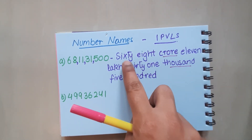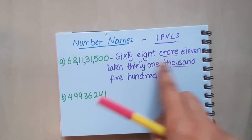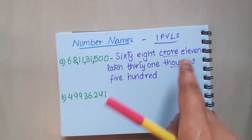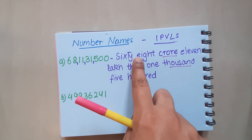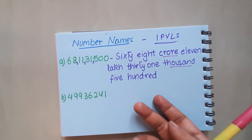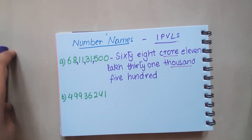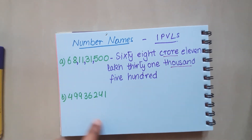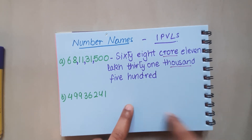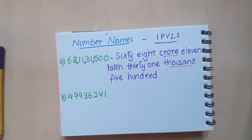So this is 68 crore 11 lakh — when we speak a number we say 68 crore 11 lakh. Write down in the comment section: mark the periods and write the number name exactly the way I have told you. Best of luck!